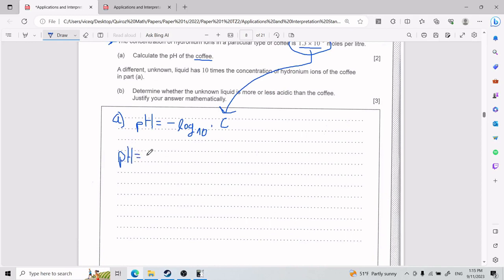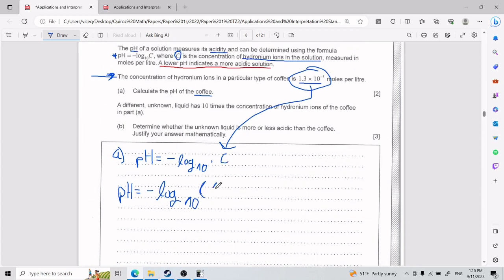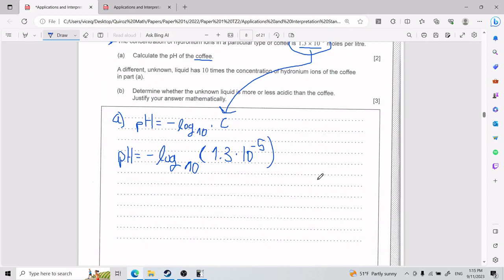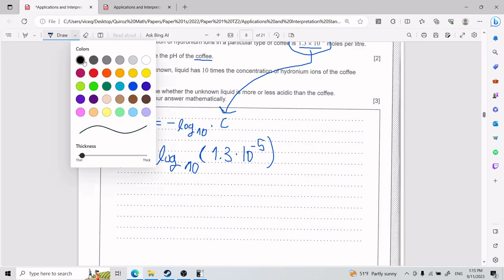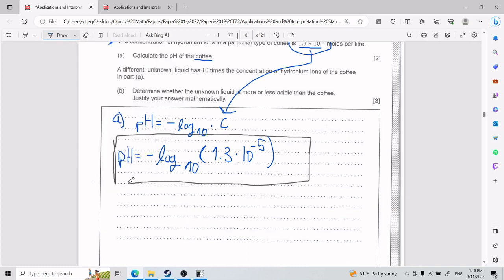So pH equals negative log base 10 times C, which C in this case is going to be 1.3 times 10 to the power of negative 5. Alright, so I know this looks kind of nasty, but something that I can point out here that is kind of cool is that if you follow the process in any sort of math problem, you're going to get there. You're going to get to the answer. And so although this looks kind of nasty, once you get to know well how to use your calculator, this is easy peasy.